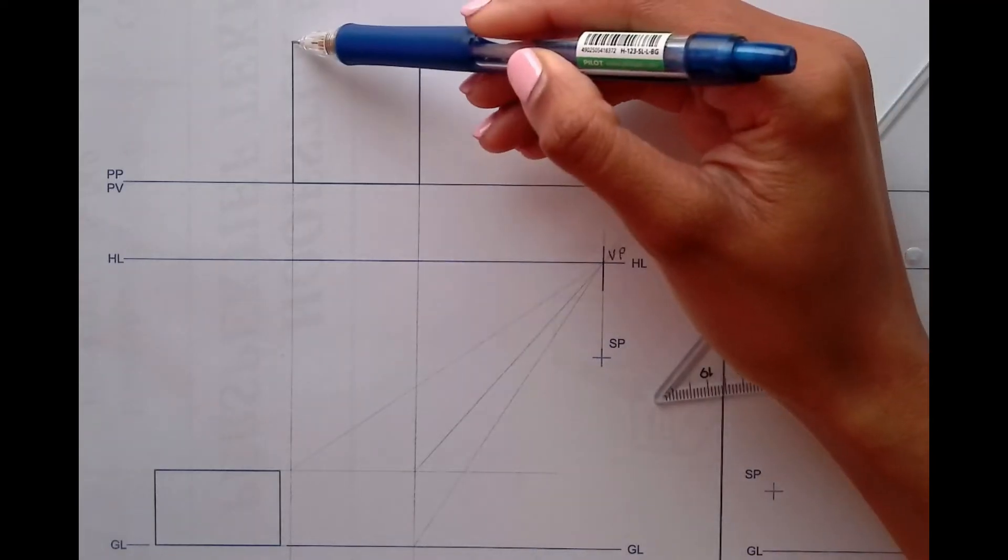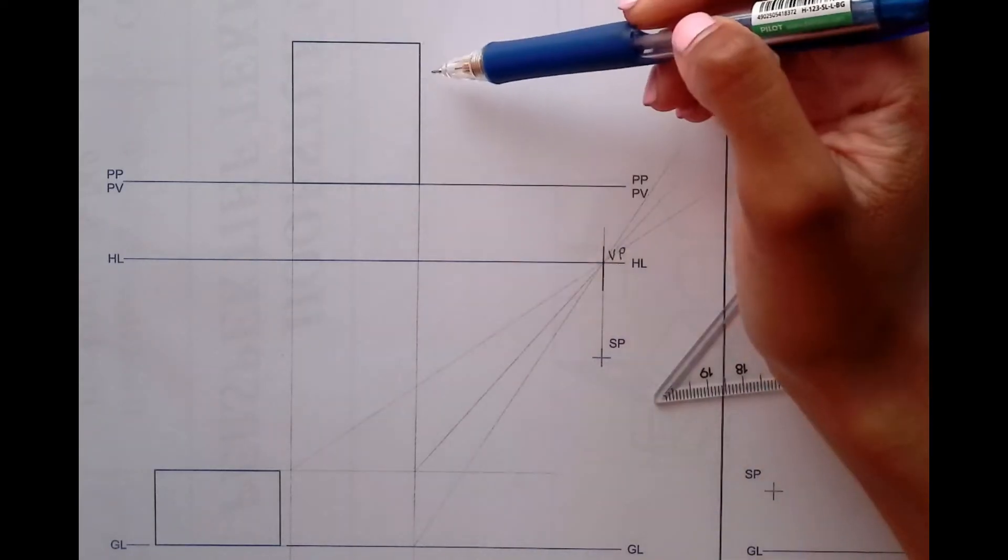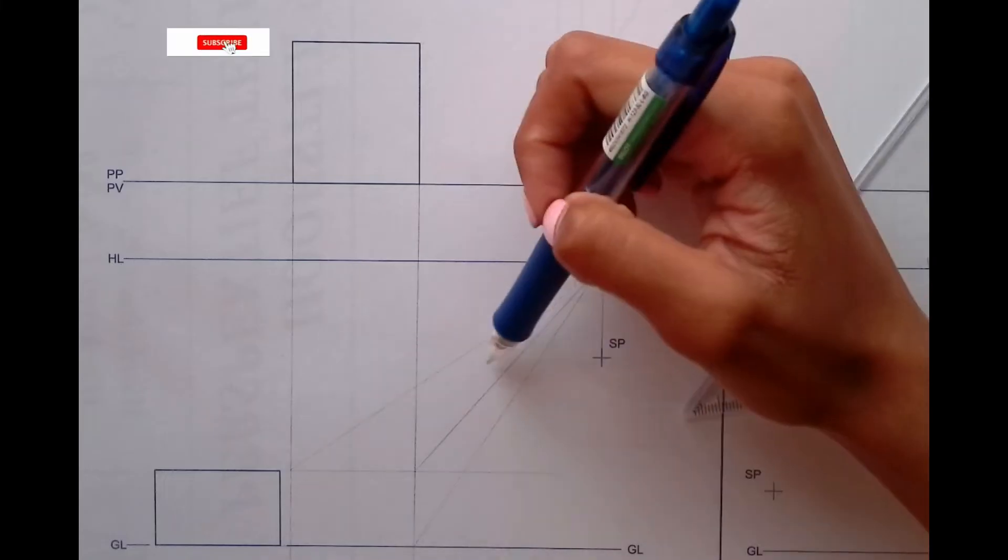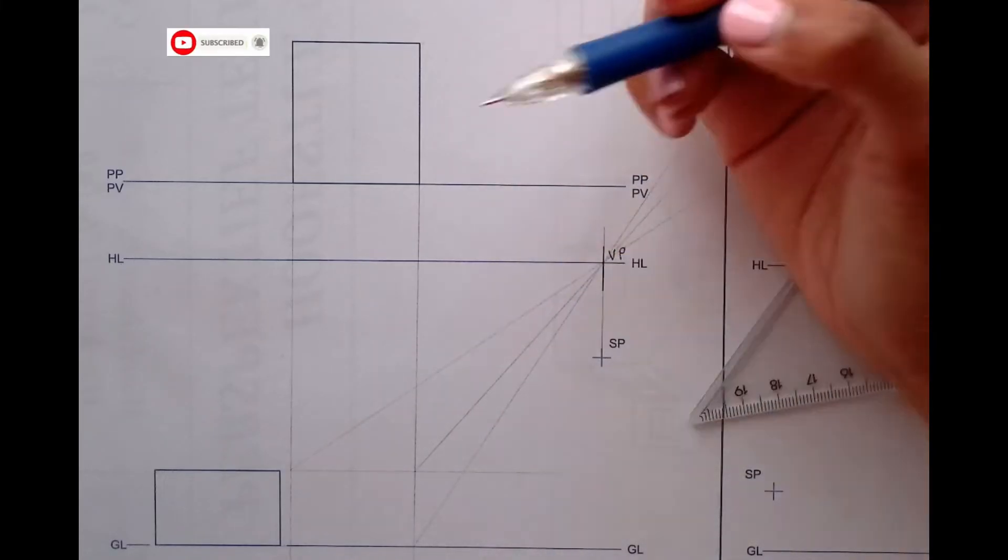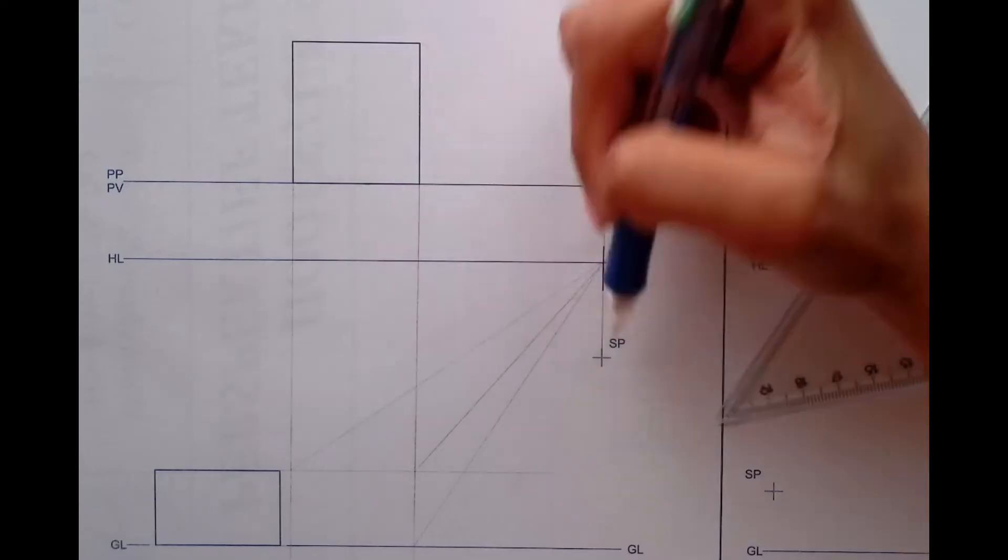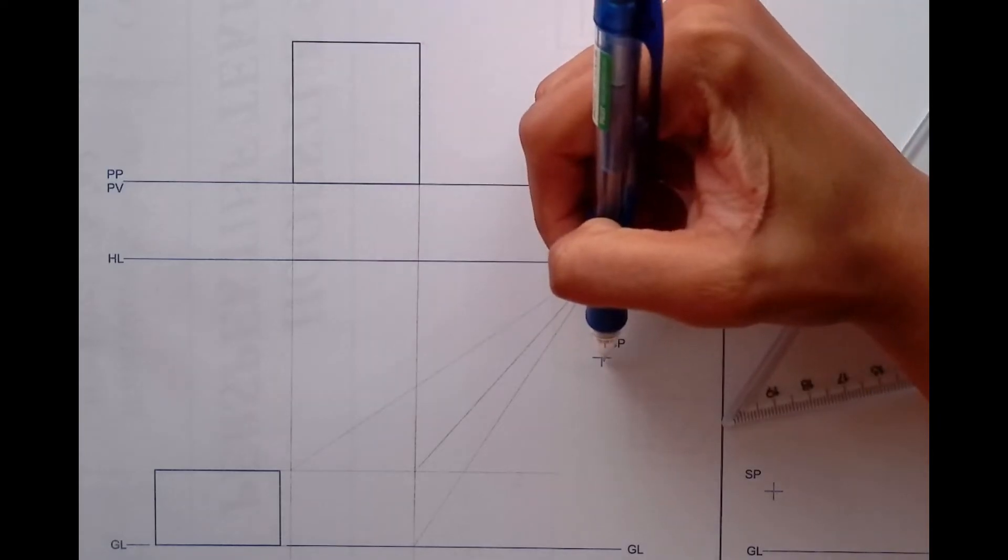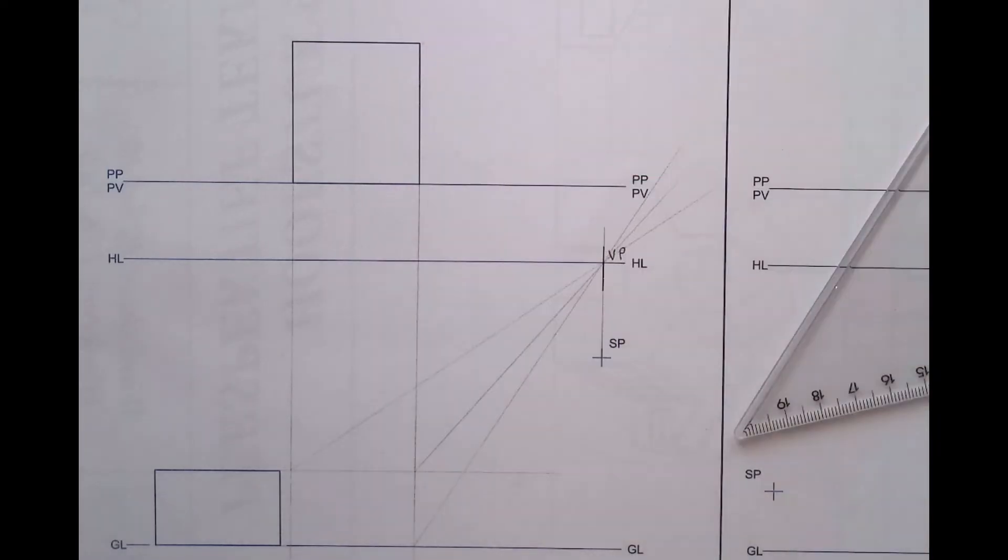Now I must bring these two corners at the back so that I can get the back part of my object. That is done by taking these two points to the stationary point and then bringing them vertically down.